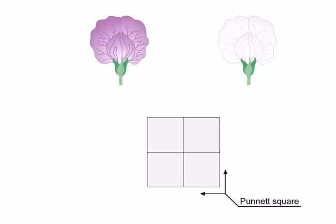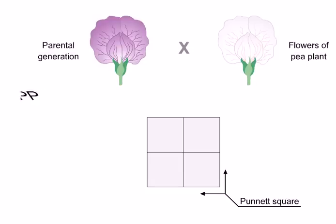Gregor Mendel conducted experiments to answer one of the fundamental questions of heredity: what are the basic patterns in the transmission of traits from parents to offspring? In this recreation of Mendel's historic experiments, you will have the opportunity to predict the outcome of two types of genetic crosses using a Punnett square.